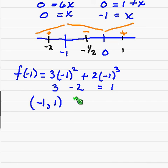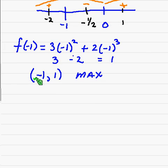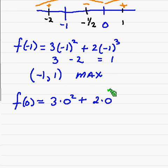Alright, now what we want to do is plug zero into the original function and find that point. So 3 times zero squared plus 2 times zero cubed, so obviously that's just zero. So we have the point zero comma zero. Then this is a minimum, and we're done with that problem.